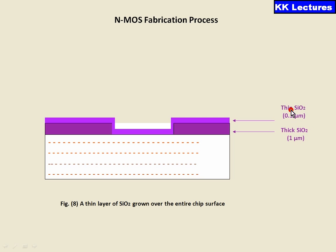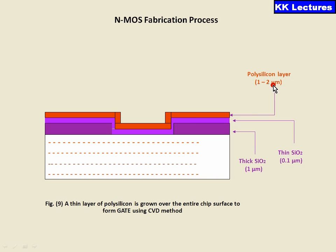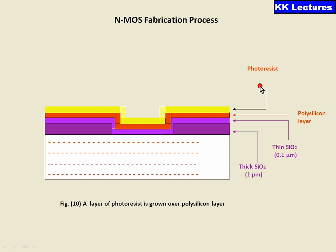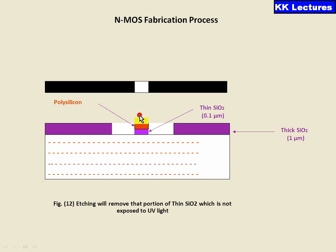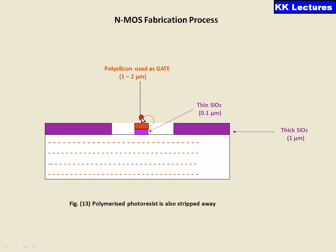Again, a 0.5 micrometer thin SiO2 is deposited on the surface to make it even. Then polysilicon of 1 to 2 micrometers is deposited on the surface. Again, a photoresist material is applied and UV rays are used to expose the required area. Wherever UV rays directly hit, the area becomes hard and the remaining material is etched away, leaving the gate structure with the silicon dioxide and polysilicon. This gives two window structures where N-type material can be diffused. N-type material is then induced into the P-type substrate to form the source and drain.